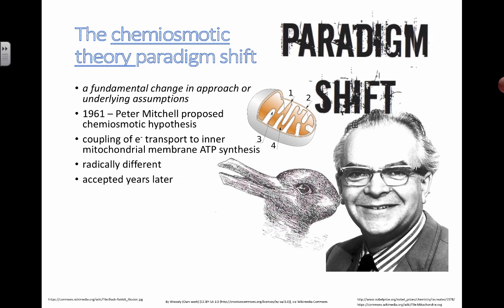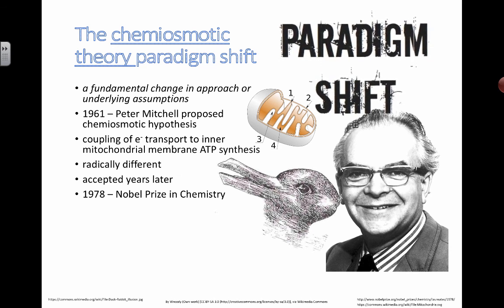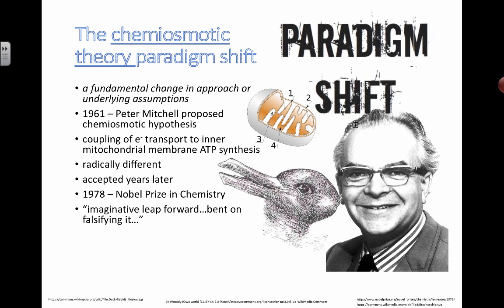It wasn't accepted until years later, and finally in 1978 he won the Nobel Prize in Chemistry for his understanding of the biochemistry of what's happening in mitochondria. During his Nobel Prize speech, he made a few quotes that were very humbling for scientists, and it's a good example of how radical ideas get accepted in science.